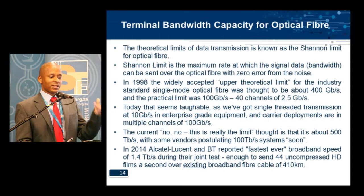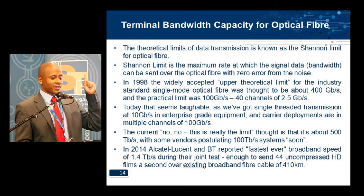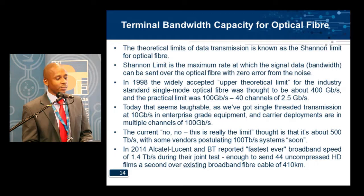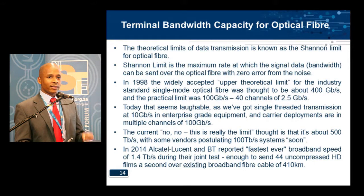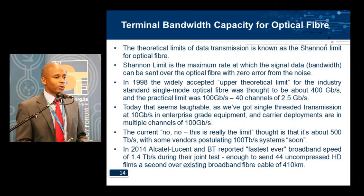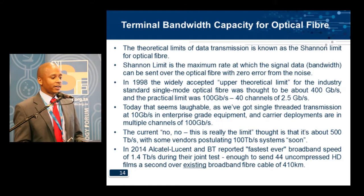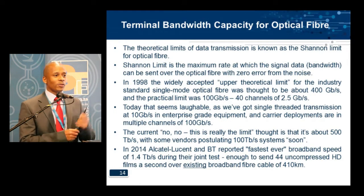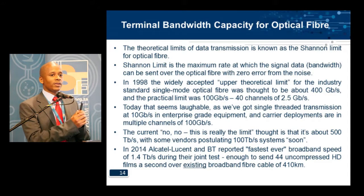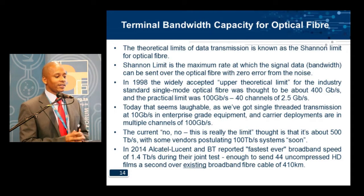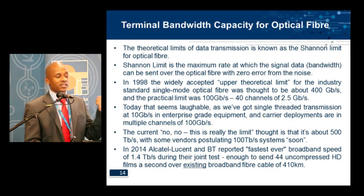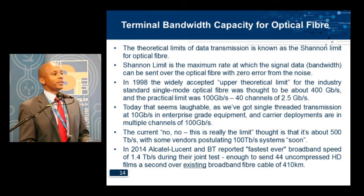Today, that seems laughable, as we've got single-threaded transmission at 10 gigabits in enterprise-grade equipment, and current deployments are in multiple channels of 100 gigabits. So in 1998 we had about 40 channels each at 2.5 gigs, whereas now we've got a single channel that can actually transmit data at 100 gigabits.